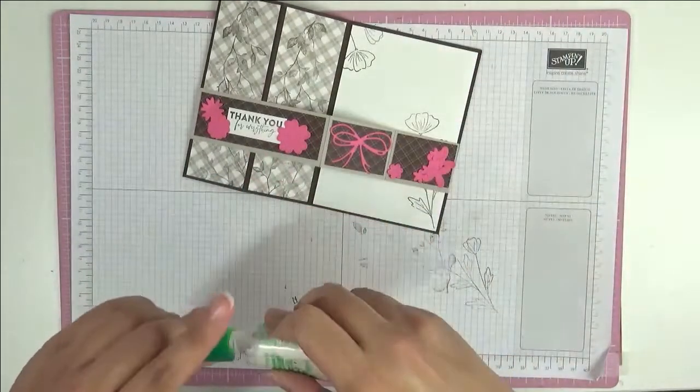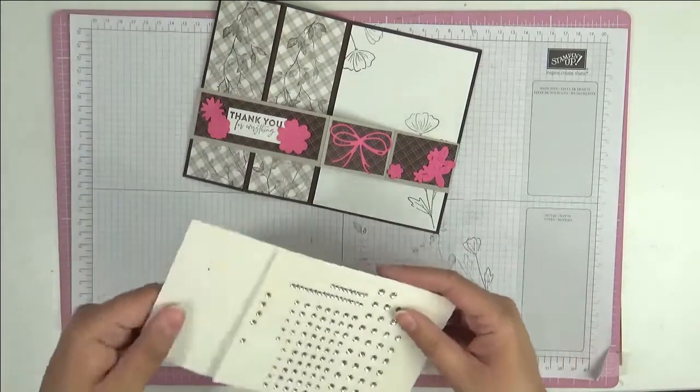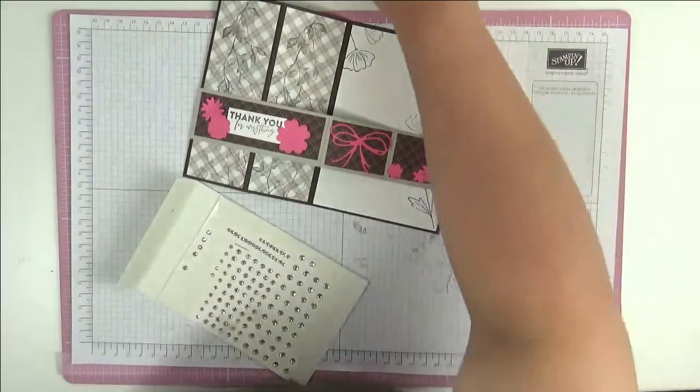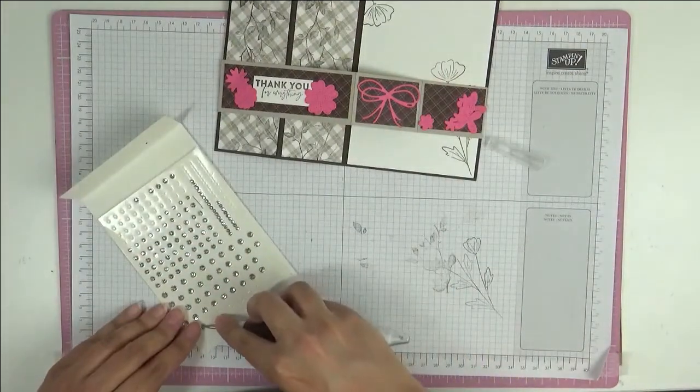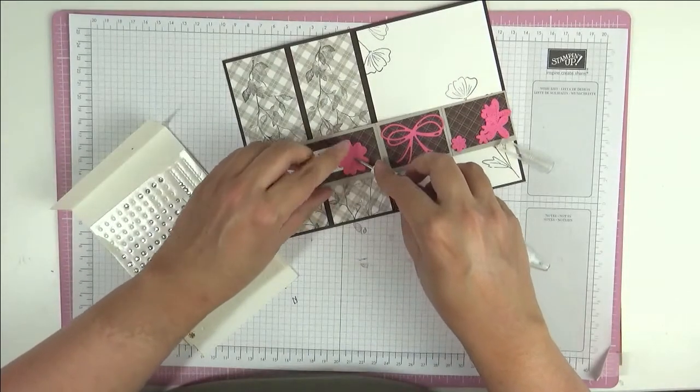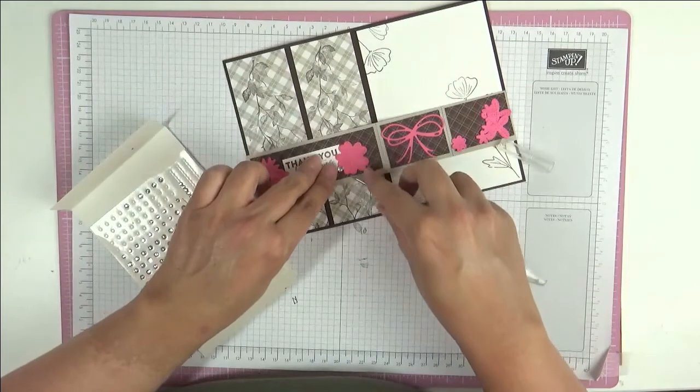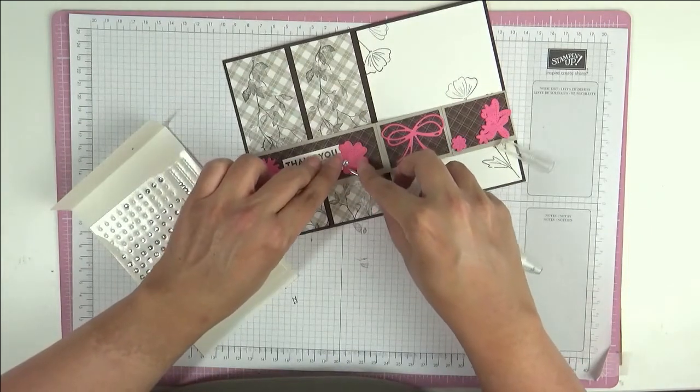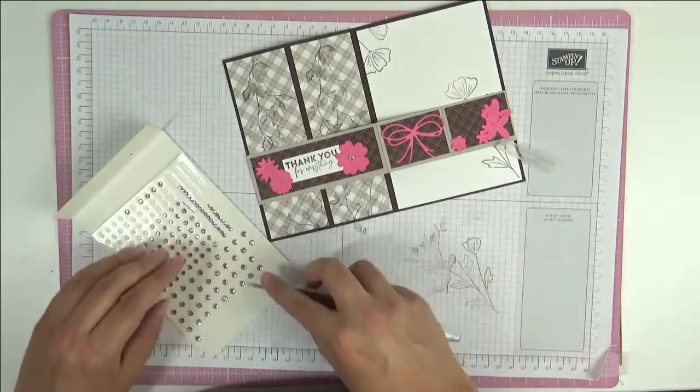Where's my lid for my Tombow? Here it is. Okay, then I've got some of these rhinestones, and we're just going to use these as our flower centers because I think they are perfect for that. And of course they don't want to stick to me rather than anything else because that's just the law of life.